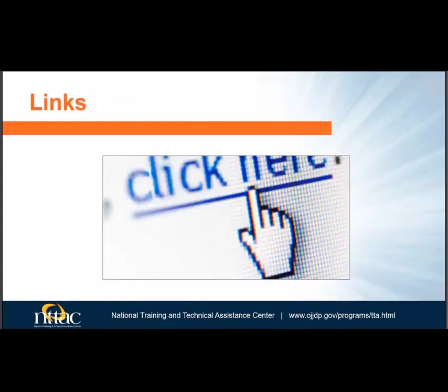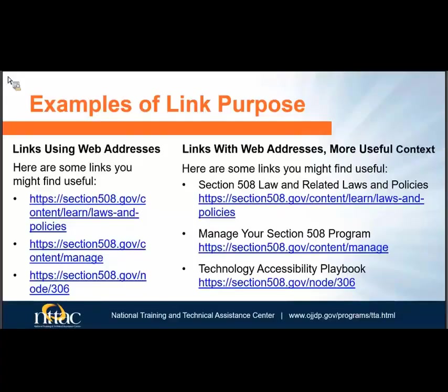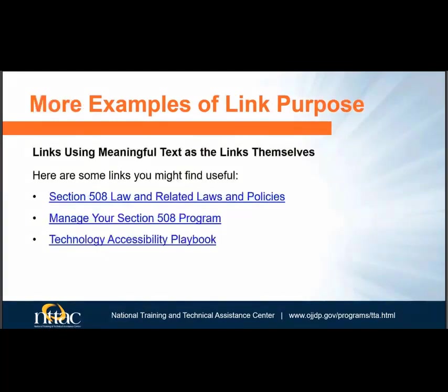Now we will address links. Links make it easy to access another place in the document or an address on the internet, and there are a few things to consider when making documents accessible. Sighted people can usually distinguish links by looking at them — they are usually underlined and a different color than the surrounding text. While URLs shown in a slide are relatively easy to interpret, not all URLs are so understandable. Including more meaningful text for link purpose is better for everyone, but especially screen reader users. The best way to include links in your documents is to make meaningful text a link.